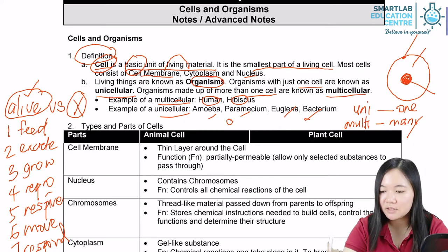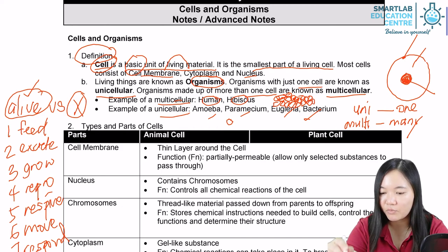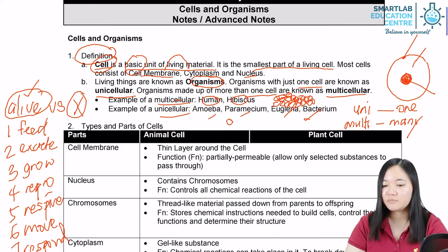Multicellular means there are lots and lots of cells which eventually make up the whole functioning organism — not just one, not just two, not just hundreds, but billions and billions to make up one multicellular organism.